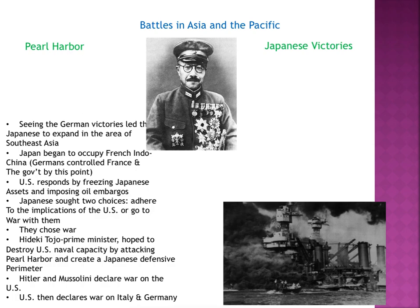From what they knew, the Germans were doing well — conquering lands and getting territories under the Reich. Japan began to occupy French Indochina, which was German-controlled France. The U.S. responded because they knew what Japan's intent was. The only thing they could do was freeze Japanese assets and impose oil embargoes — not selling them oil — to hopefully stop the Japanese.